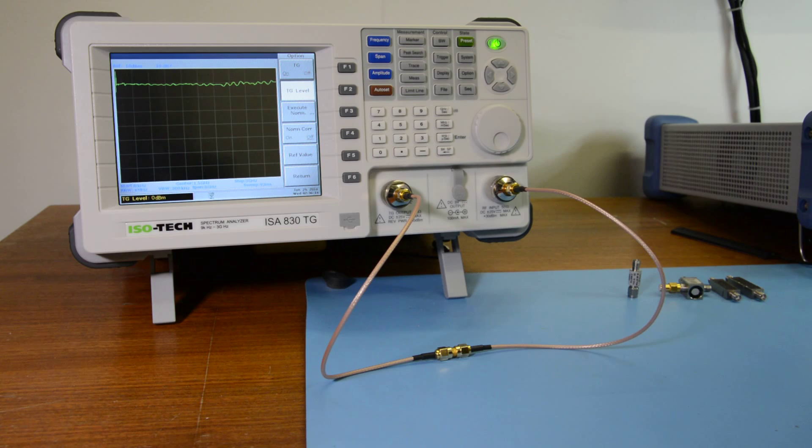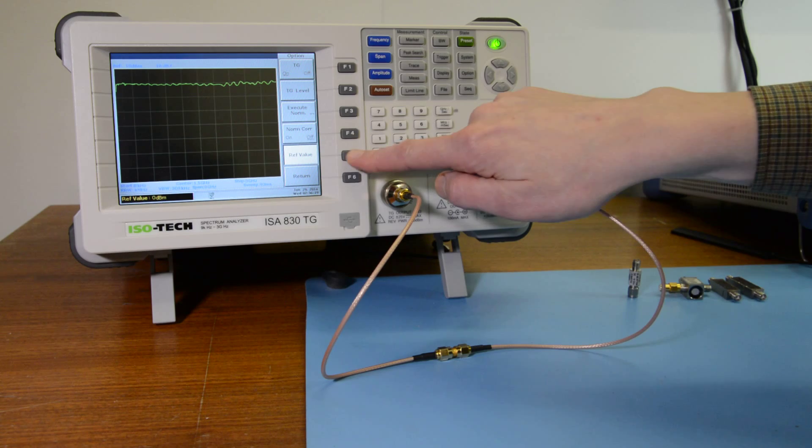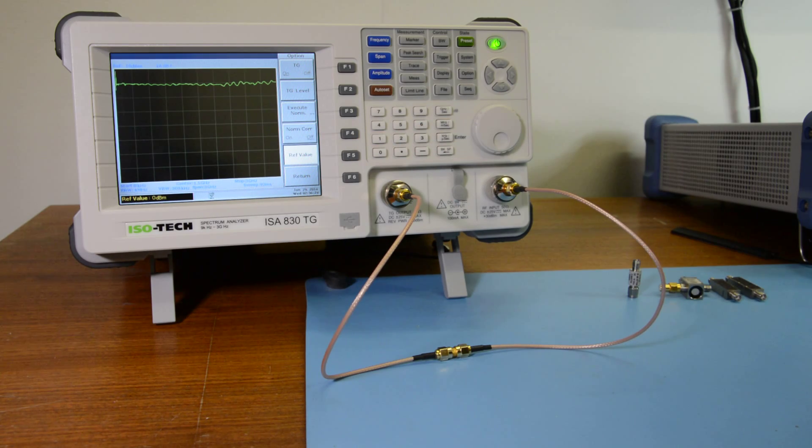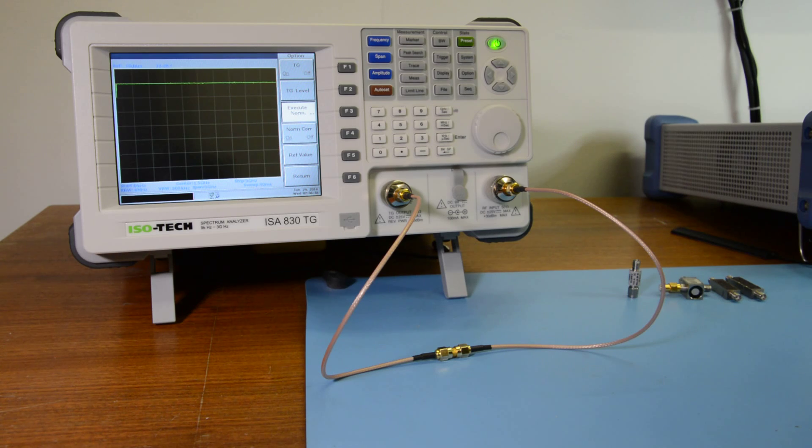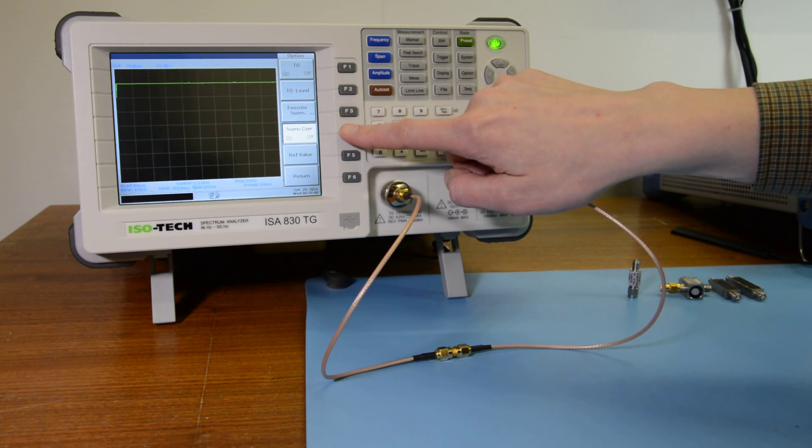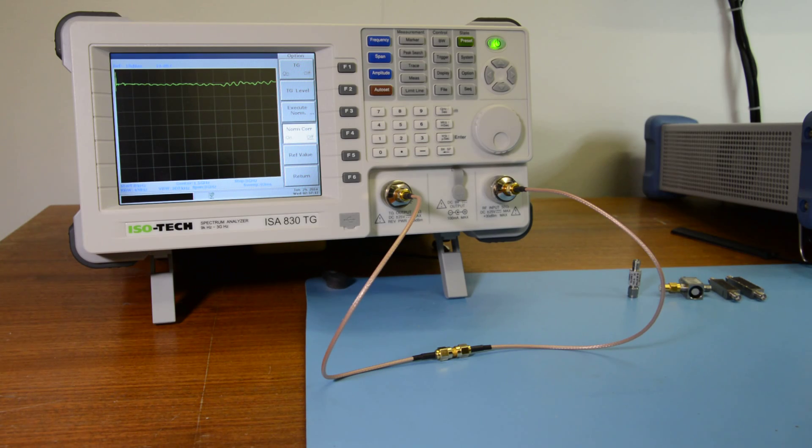Now to do that, we can set the level of the signal that will be used for performing that task. That's selected by pressing F5 for the reference value. We can see that that's set to 0 dBm, which is fine certainly in this case. So then we can press F3 to execute normalization and then F2 select yes, and we can see the result there with correction in place. Now if we press F6 to return, we can check there that normalization correction is turned on. We can toggle this between on and off by pressing F4 just to see the effects again without that correction in place. If we turn it back on.